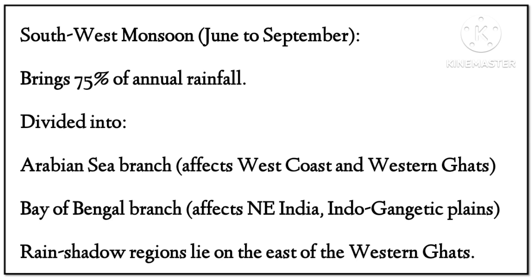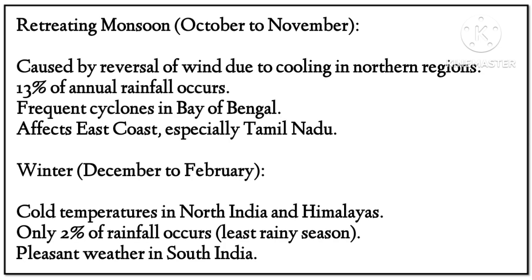The Southwest Monsoon (June to September) brings 75% of annual rainfall. It is divided into the Arabian Sea branch, which affects the west coast and Western Ghats, and the Bay of Bengal branch, which affects northeast India and the Indo-Gangetic Plains. Rain shadow regions lie on the east of the Western Ghats.